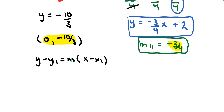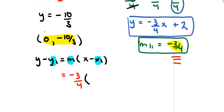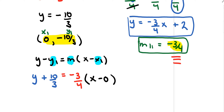I'll fill in the slope, x1, and y1 values. My slope is negative 3 over 4, my x1 value is 0, and my y1 value is negative 10 over 3. Substituting those in, I get y plus 10 over 3 on the left-hand side and x minus 0 on the right-hand side.